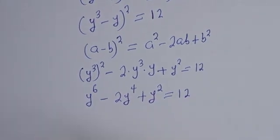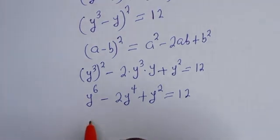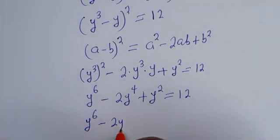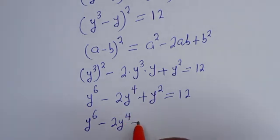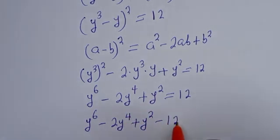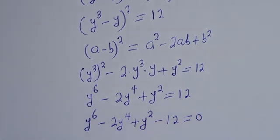Rearranging, this becomes y to the power of 6 minus 2y to the power of 4 plus y squared minus 12 equal to 0.